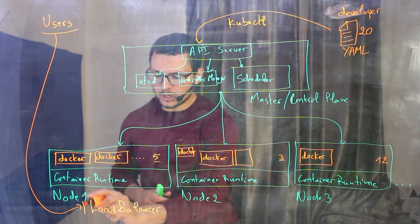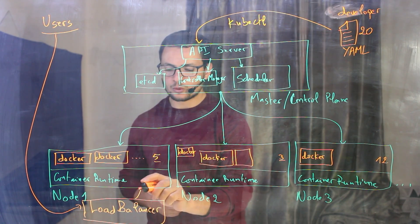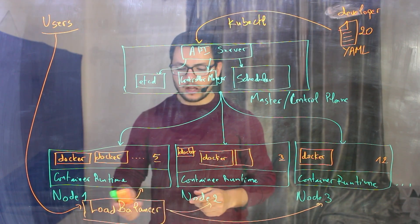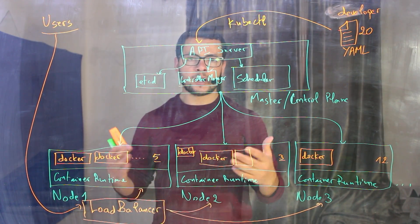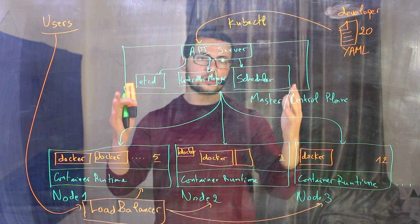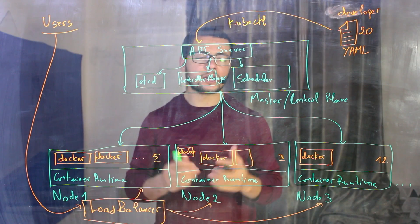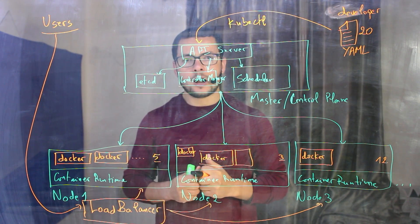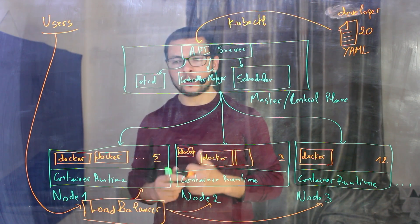For that we'll have here another component called load balancer. And through the load balancer, we can redirect the user to node one, node two or node number three. The load balancer here could be created by cloud provider. If our cluster lives inside the cloud provider, we can create it manually on premise. And we can also use a managed cluster on the cloud.